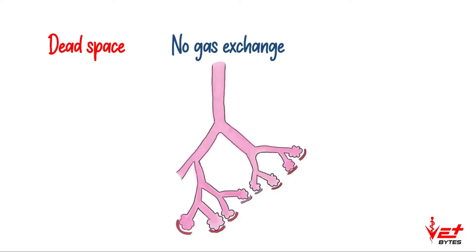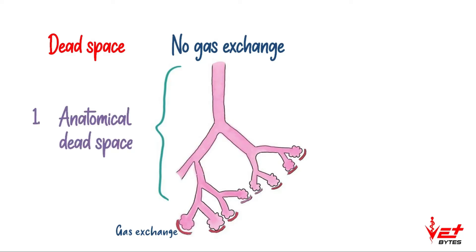The bronchi further divide into secondary bronchi, tertiary bronchi, and finally end up in bronchioles and then alveoli. Gas exchange takes place only at the level of alveoli, so the respiratory passages starting from the external nares up to the bronchioles do not take part in gas exchange. This passage is referred to as anatomical dead space.